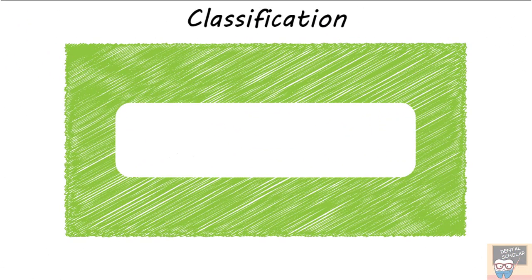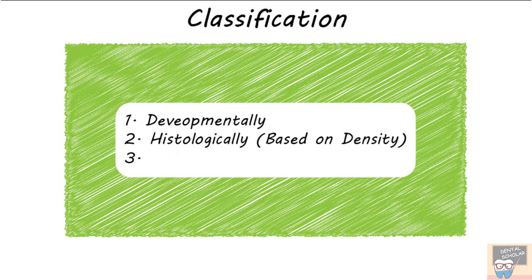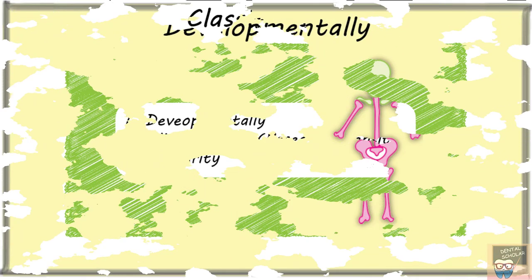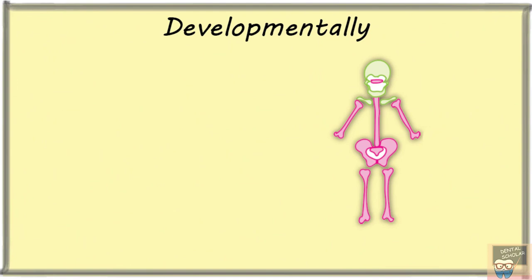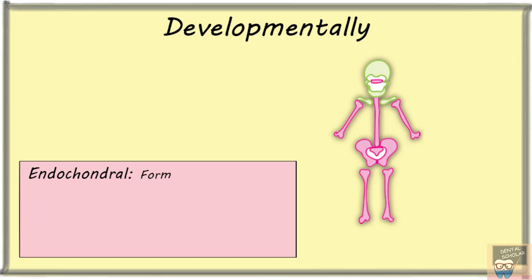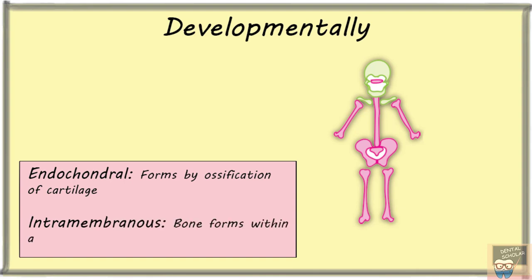Let's now go to the classification of bone in general. Bones may be classified developmentally, histologically, and based on their maturity. Developmentally, bones may be classified as intramembranous and endochondral. The endochondral bones form by ossification of cartilage, and intramembranous bones form within a vascular fibrous membrane.